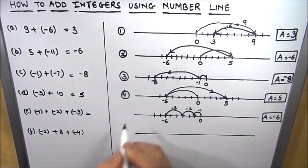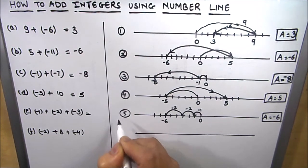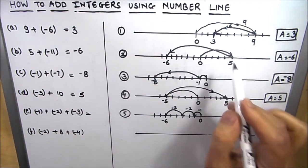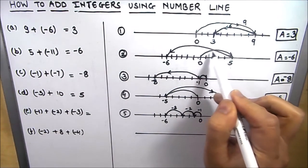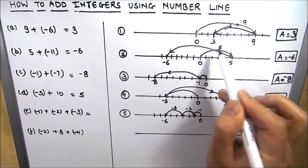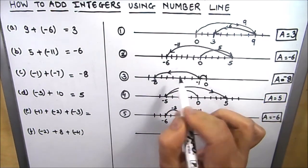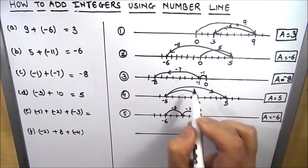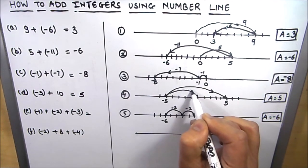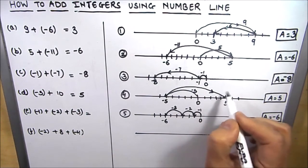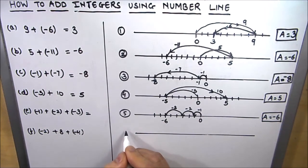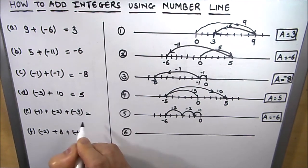This is how you move and add numbers on the number line. Let me write the numbers on top of these lines: this is negative 2, this is negative 5, this is plus 10. The answer here is negative 6.